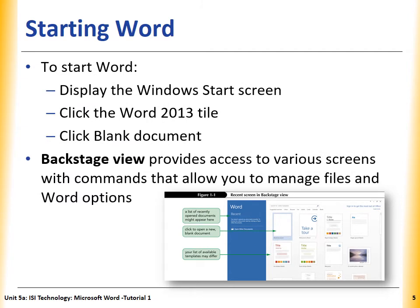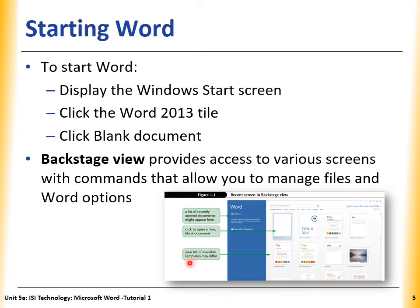This is how to start Word. To start Word, when we open it, we have to choose an option. We can choose a blank document, or we can choose any preset document or style. To start Word, display the Windows Start screen, then click on Word 2013 or 2016 — whichever you have on your computer. At the beginning, we have to click on the Blank Document. You can also see the list of recently opened documents here. The list of available templates may differ depending on the version of your Word.